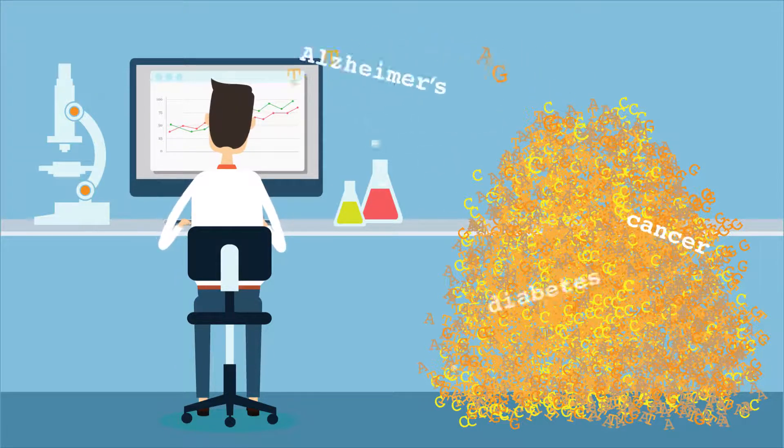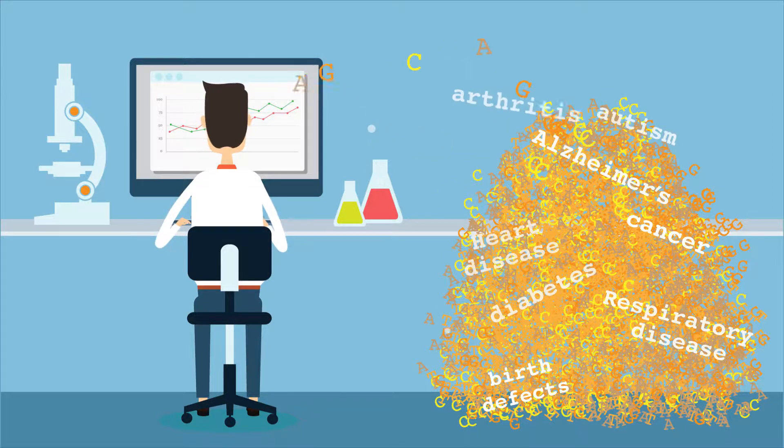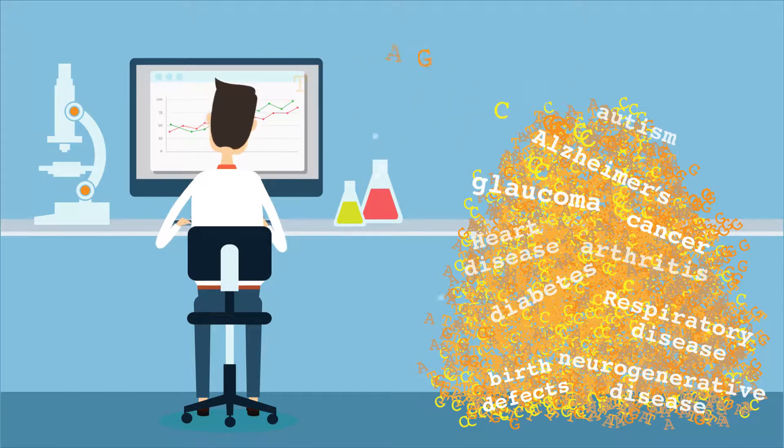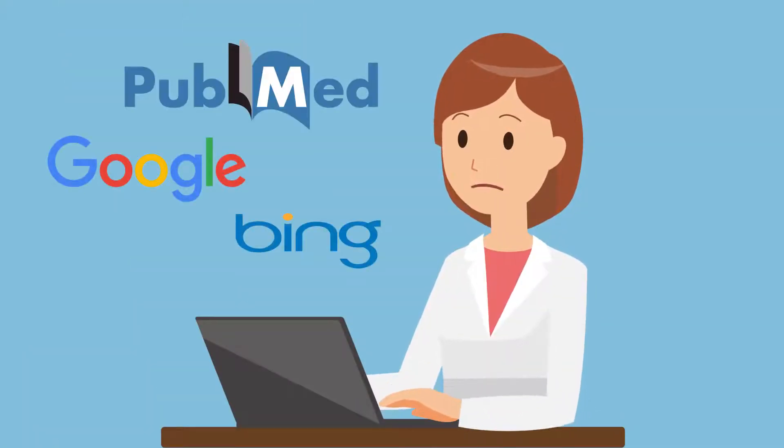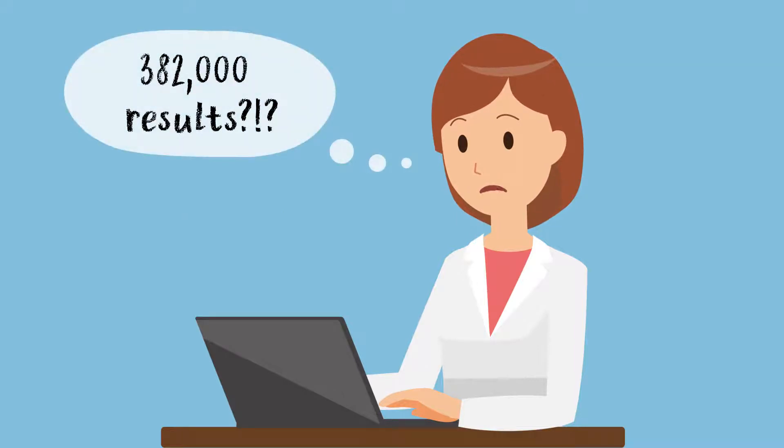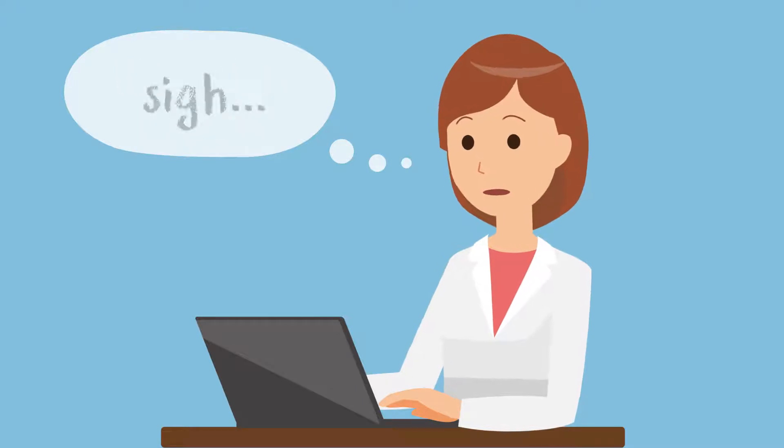While genetic and genomic technologies have allowed researchers to produce more data faster, finding and comparing meaningful data can feel like looking for a needle in a haystack. Search engines and resources like PubMed return lots of individual results, but you are left to filter and organize them to determine which data are truly relevant to your research question.